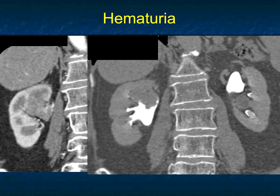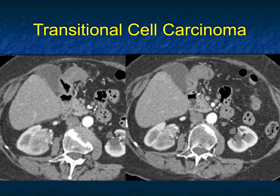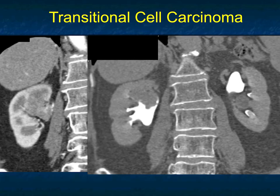This is not inflammatory disease — this is something infiltrating. This is why you need excretory phase in hematuria workup: things like transitional cell carcinomas, and we also know pyelonephritis may not be seen unless you have excretory phase imaging. The answer here was a TCC. Here are a couple of axial images plus the two images that allowed you to make the diagnosis.